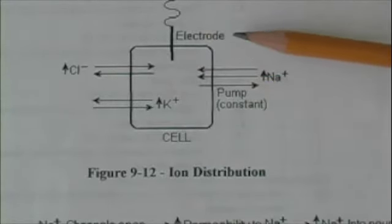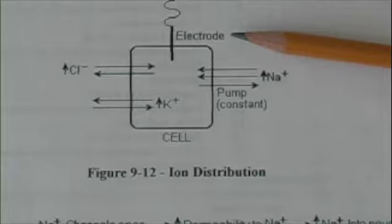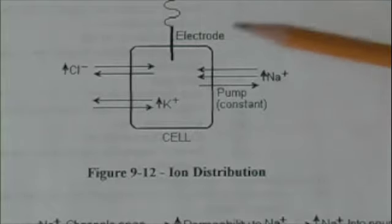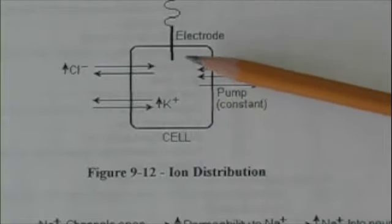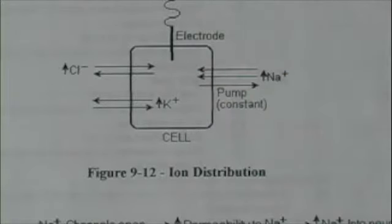And let's stick a teensy-weensy electrode in the cell. Now an electrode can do two things: it can conduct current, or it can detect current or charges. In this case, we would detect the negativity inside the cell.